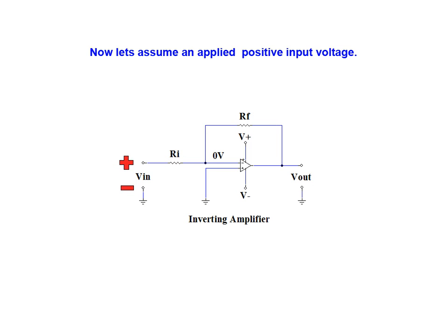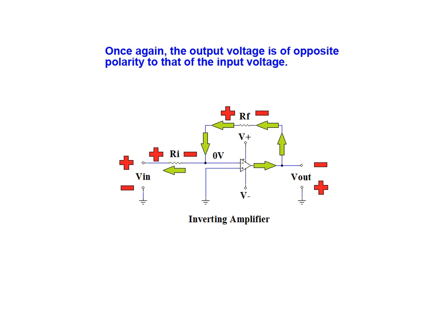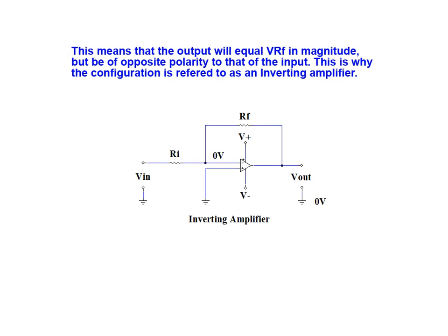Now let's assume an applied positive input voltage. This would mean that current would flow in the opposite direction. The voltage drops for the two resistors would now have the polarity shown here. Once again we can see that the output voltage will be of opposite polarity to that of the input voltage. This means that the output will equal VRF in magnitude but be of opposite polarity to that of the input. This is why this configuration is referred to as an inverting amplifier.